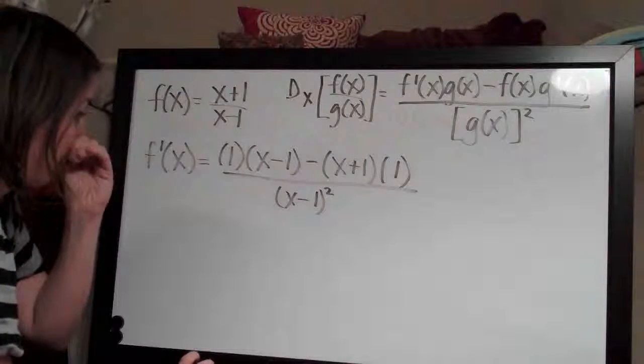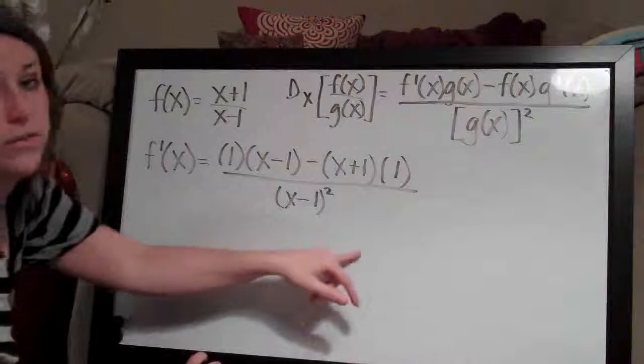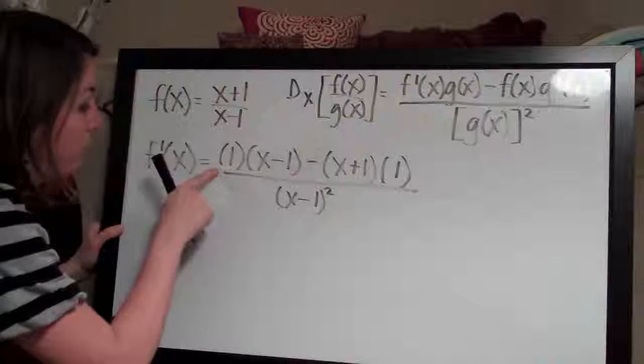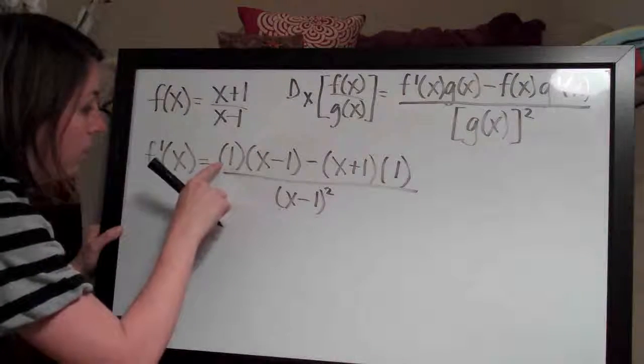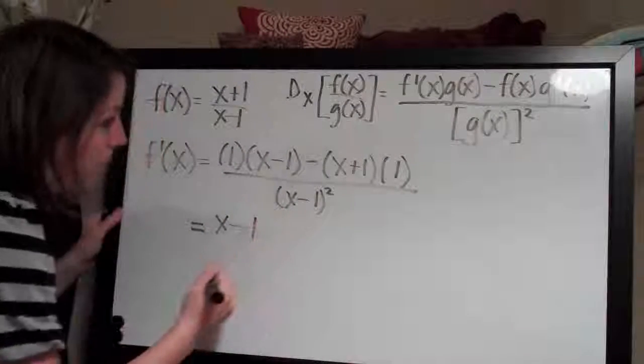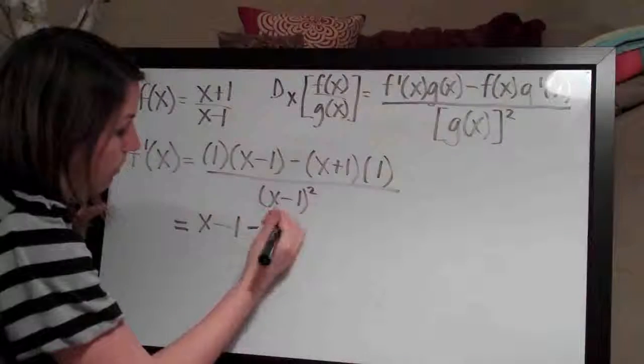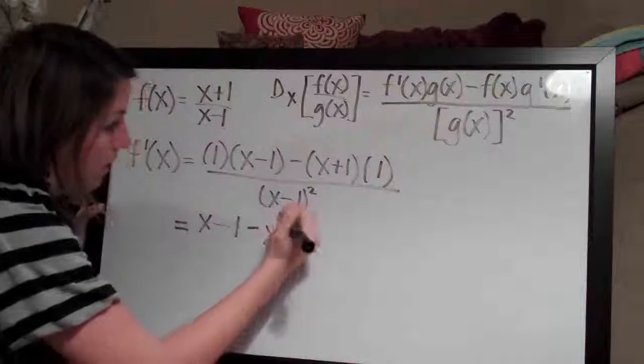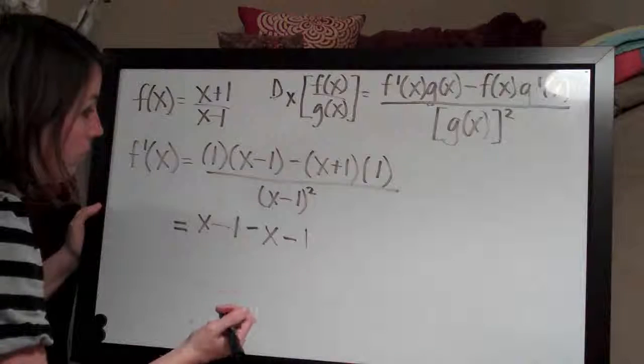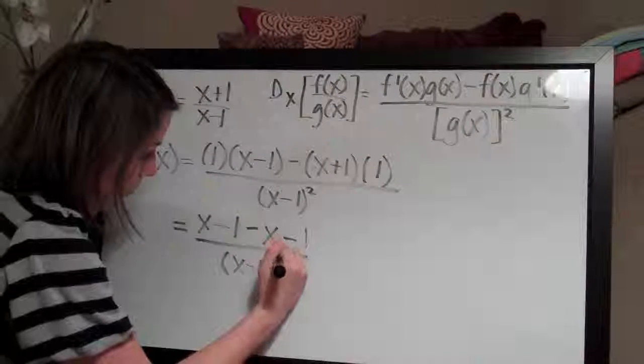So now that we've applied the formula, all we need to do is simplify this function to get the final answer. Let's distribute the 1 here. We multiply 1 by x minus 1 and we just get x minus 1, and then if we distribute the 1 here, we'll end up with minus x and then because we have a negative sign here, a minus 1 as well. So that's the top and then the bottom we leave as x minus 1 squared.